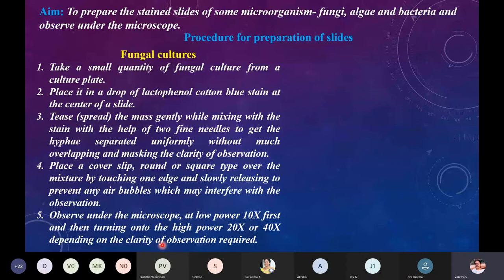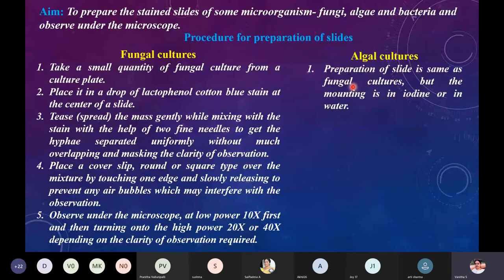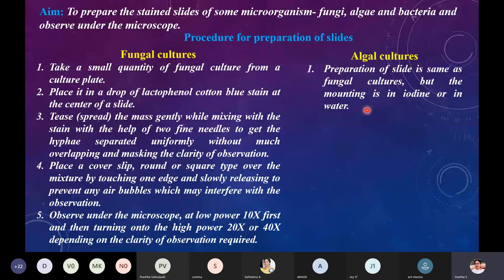For algal cultures, the procedure is the same but with a slight difference in the mounting. You take the algal cultures onto the slide, then add the stain. For algae you can use iodine, or just mount in water, and then observe initially at low power and then at high power (20x or 40x). Because algal organisms are a little bigger in size, at 40x magnification you will be able to locate them clearly.